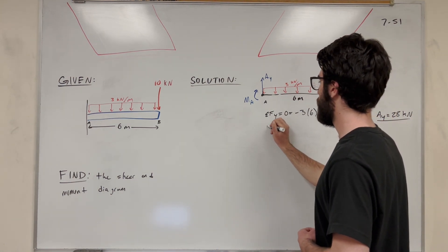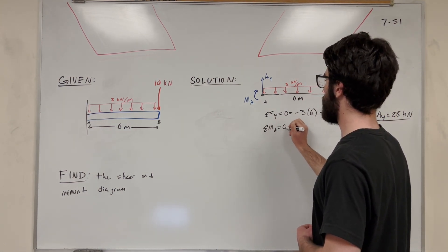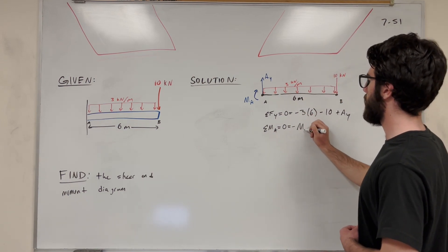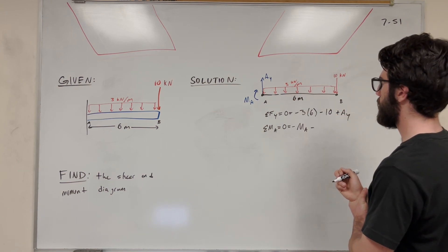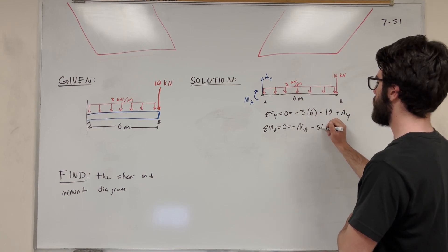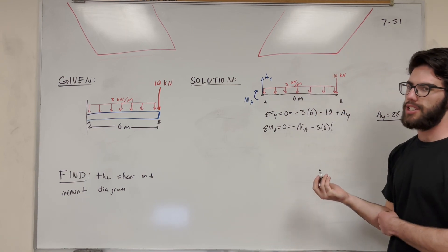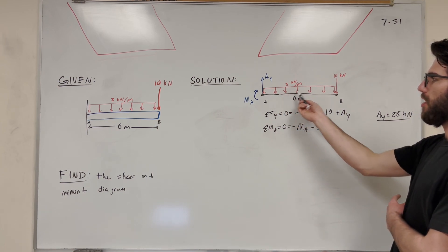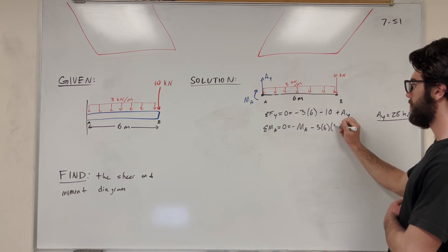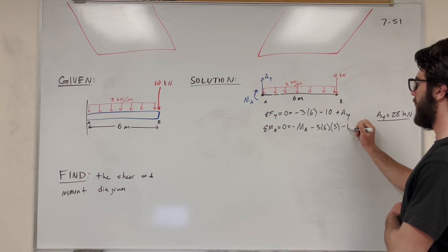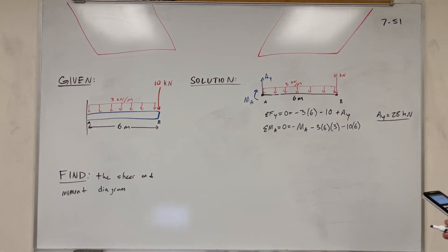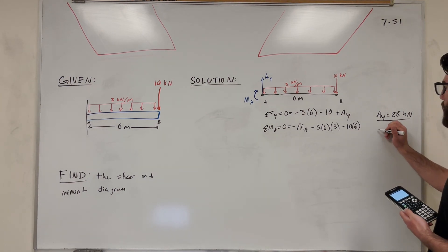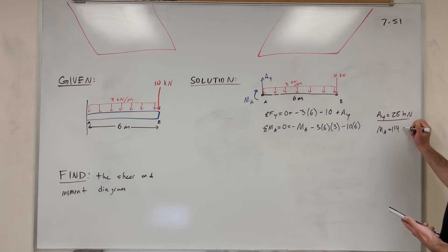Let's take the sum of the moments around A, which has to equal zero. So we have a negative moment of A. This distributed load and the point load are both pushing negative. So it's going to be minus 3 kilonewton per meter times 6 meters, multiplied by its center of mass at 3 meters. Then we subtract 10 times its distance of 6, plus 60. So the moment around A equals 114 kilonewton meters.